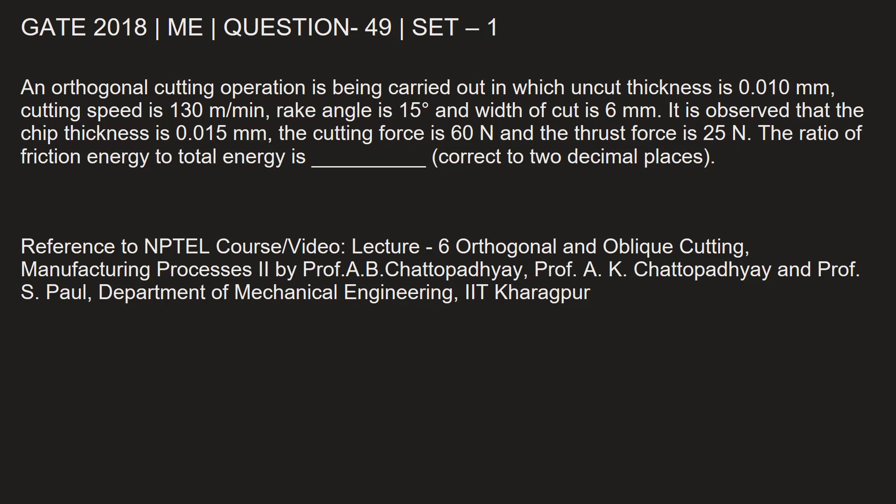An orthogonal cutting operation is being carried out in which uncut chip thickness is 0.01 millimeters, cutting speed is 130 meters per minute, rake angle is 15 degrees and width of cut is 6 millimeters. It is observed that the chip thickness is 0.015 millimeters, the cutting force is 60 Newton and the thrust force is 25 Newton. The ratio of friction energy to total energy is to be found.